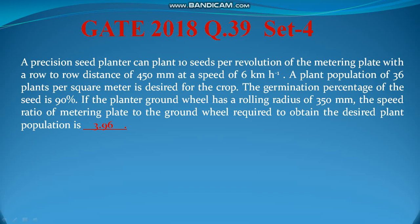It is now confirmed that the forward speed has no effect and no role in calculating the speed reduction between the ground wheel and the metering plate. The answer is 3.96, and this solves the problem.